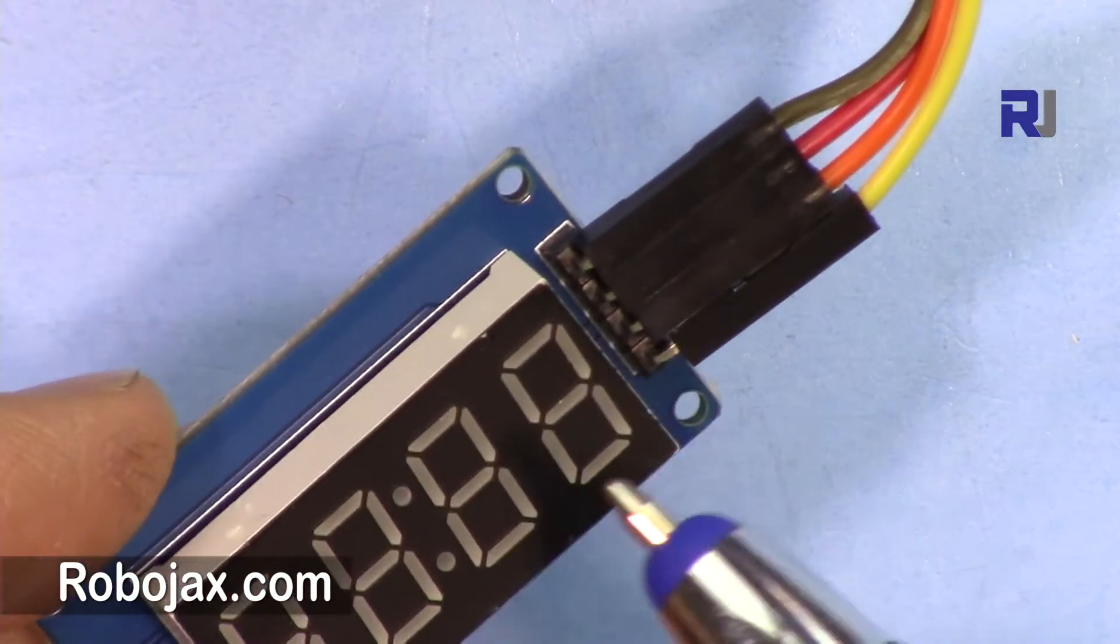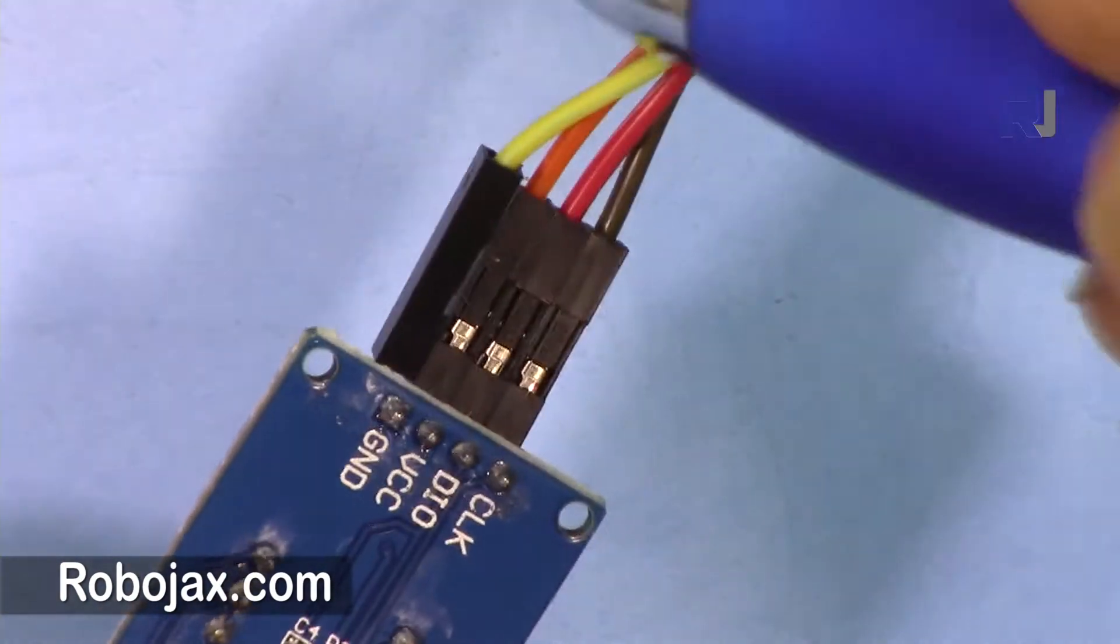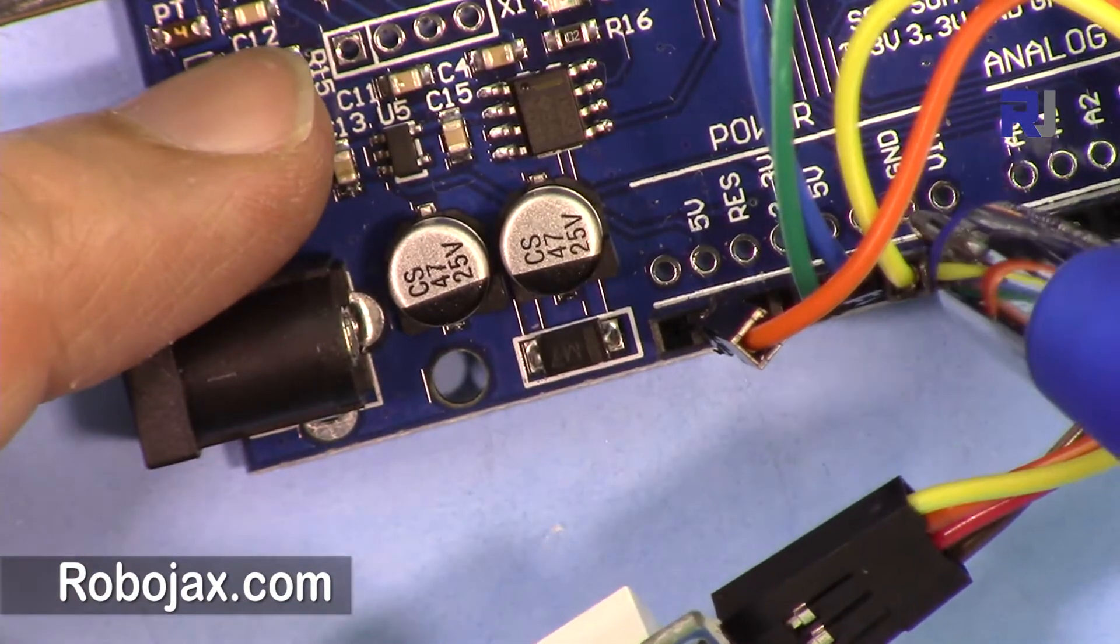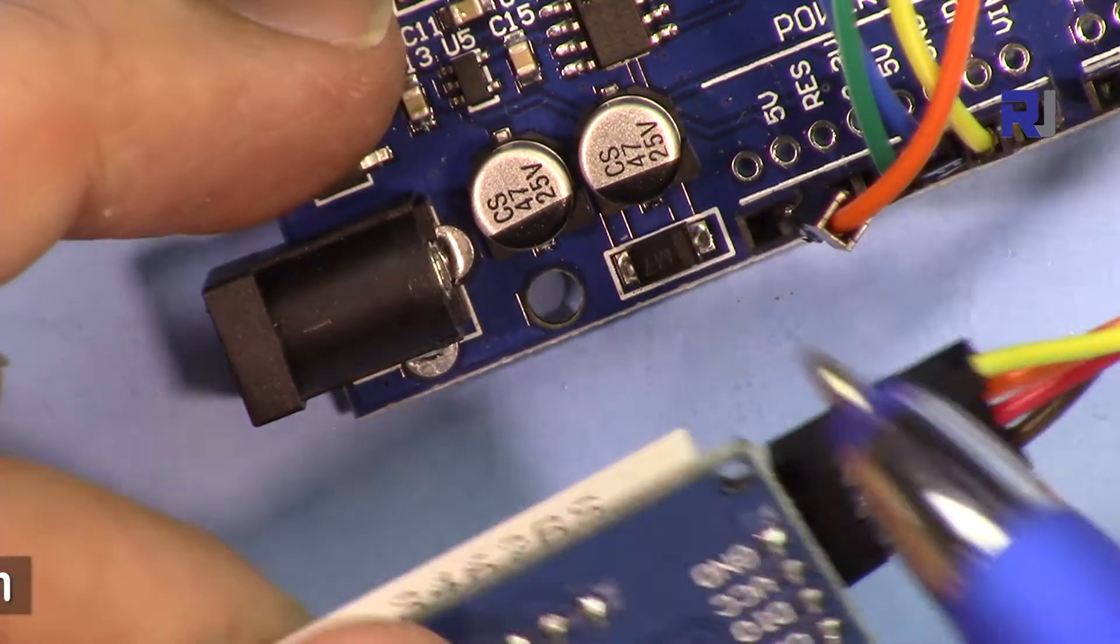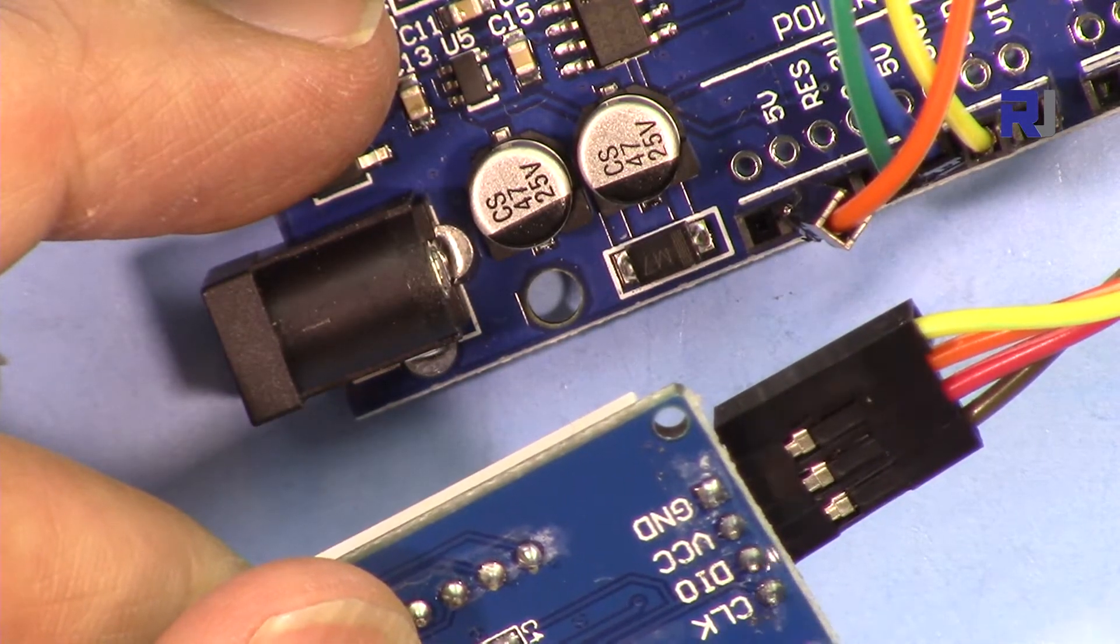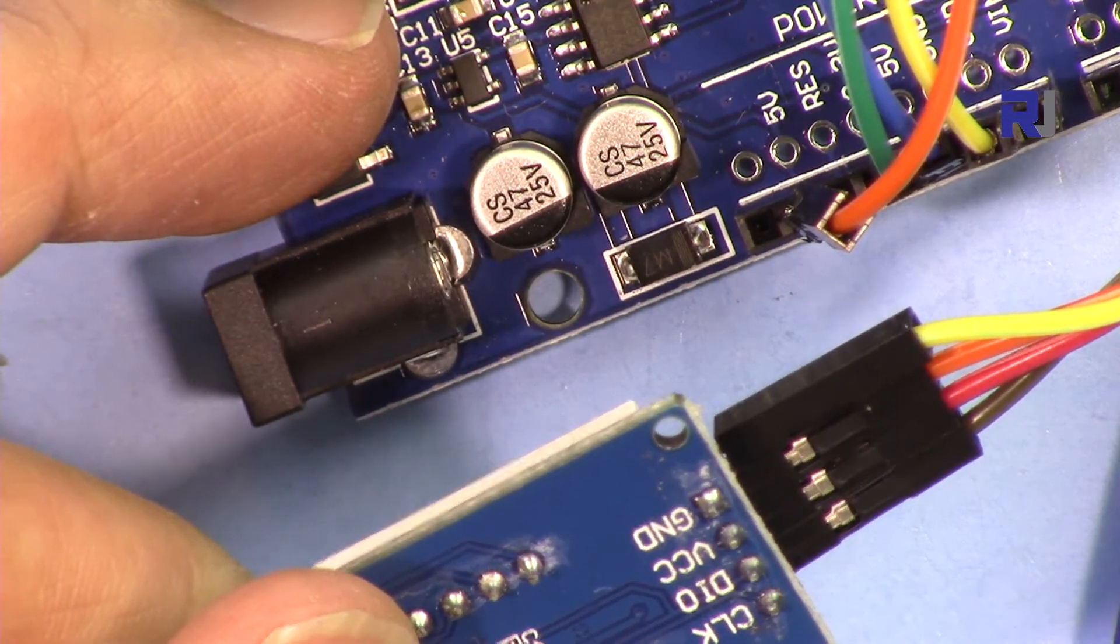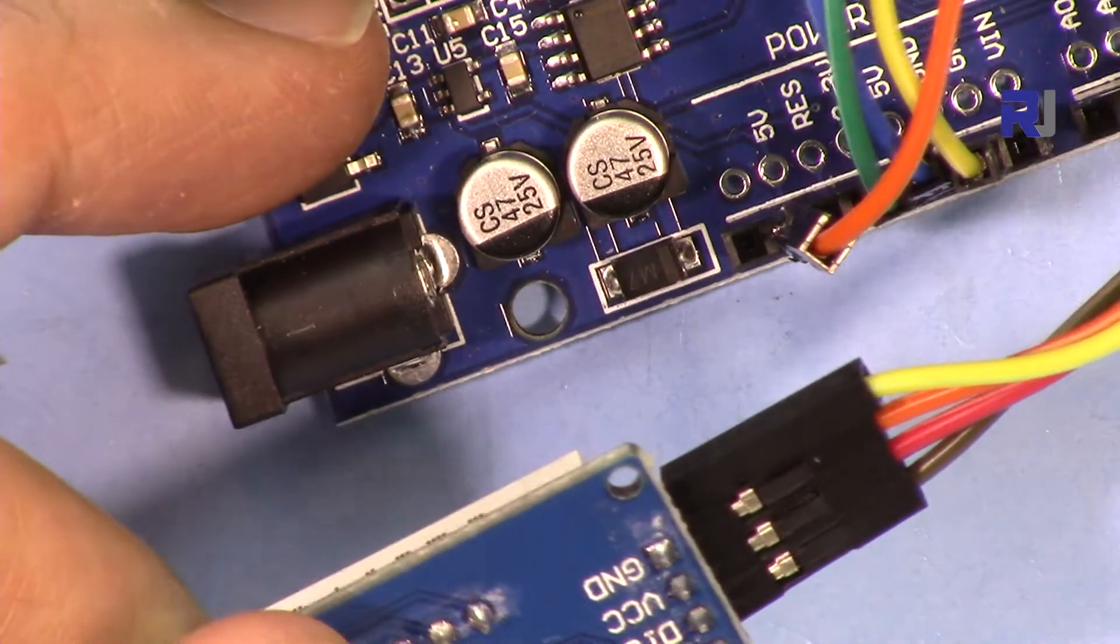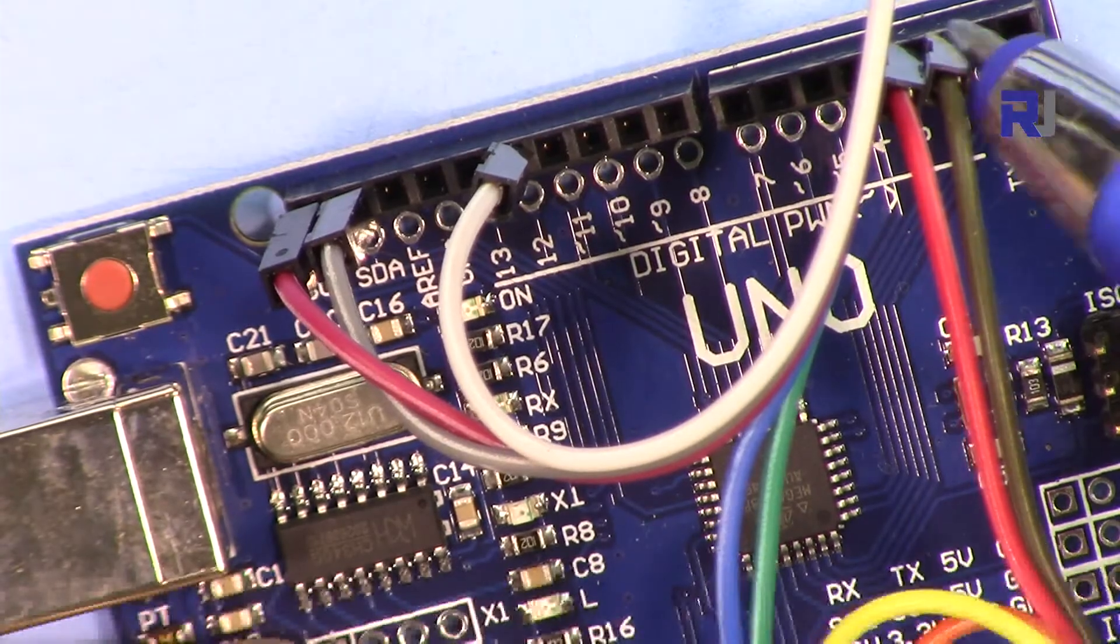For this module, we have these four pins. Ground is connected to the ground of this Arduino, and VCC is connected to 5 volts. Then we have the digital data and the clock. The brown wire is connected to pin 2, and the red wire for data is connected to pin 3.